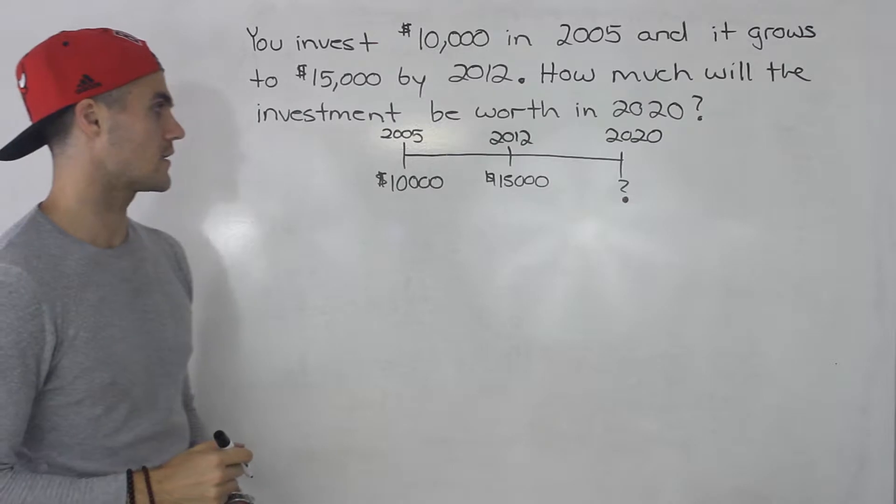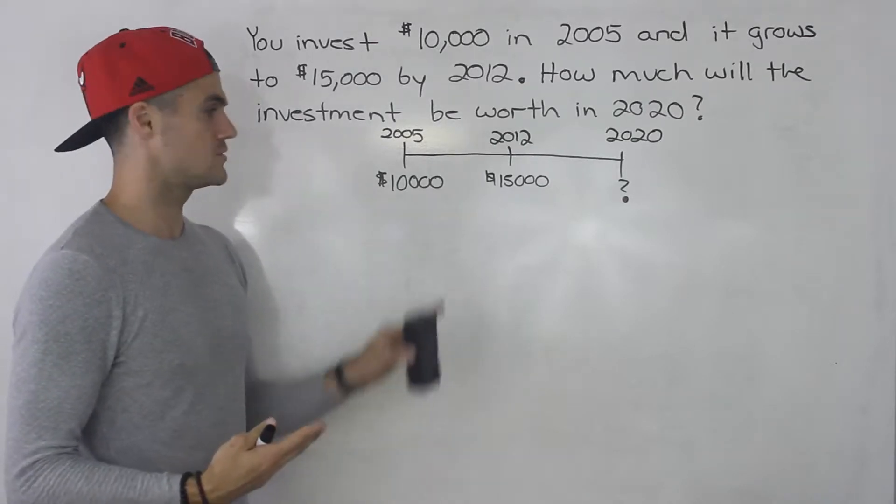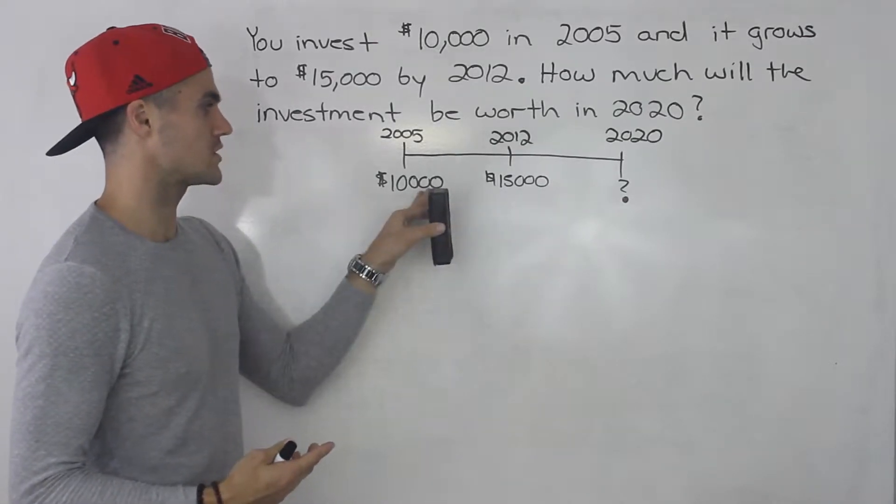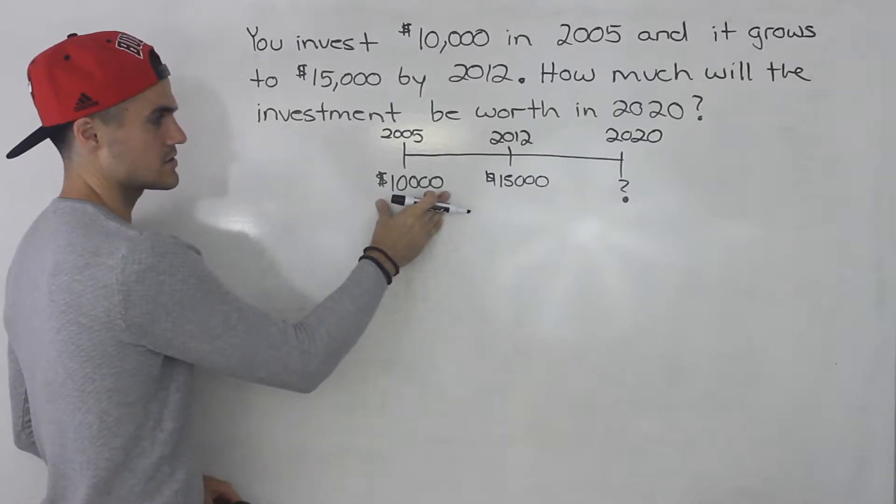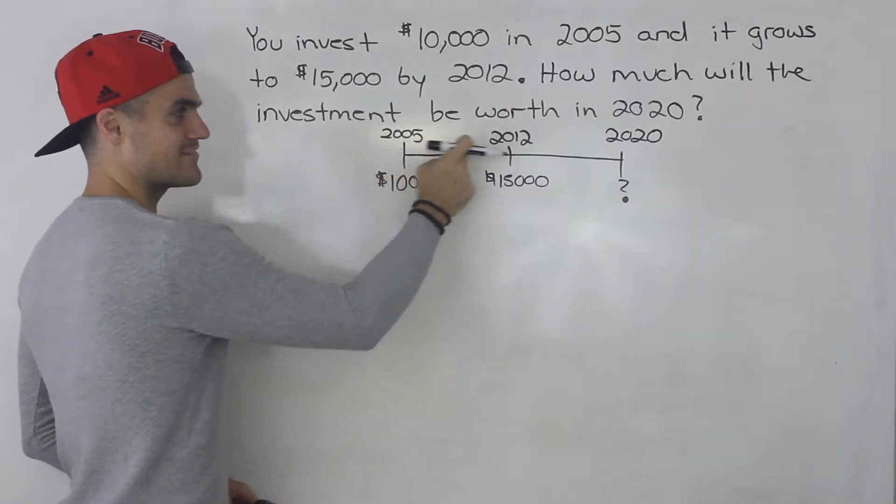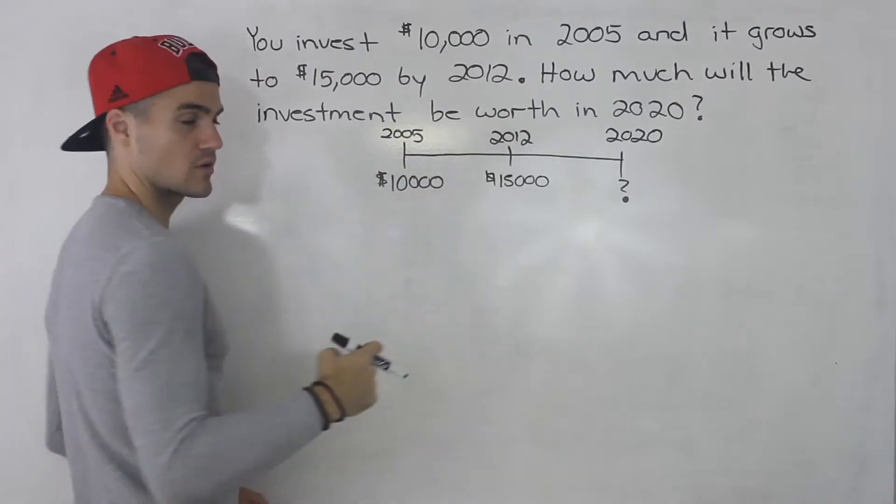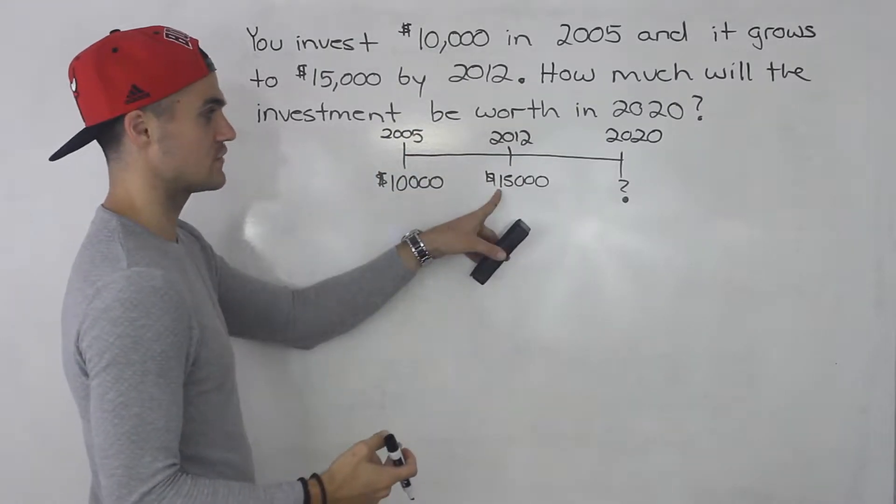So how can we figure that out? Well perhaps we can make an equation using these two pieces of information. We know the initial value is $10,000 and then in seven years from 2005 to 2012, that's seven years, it's growing to $15,000.